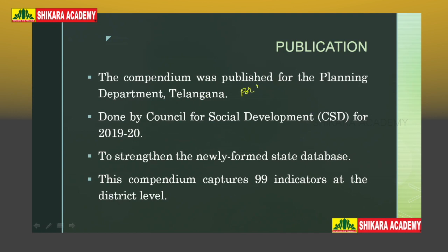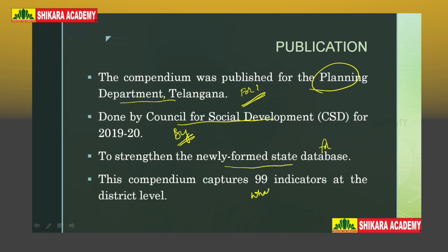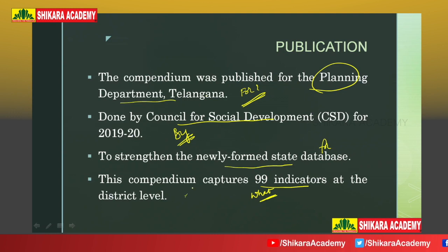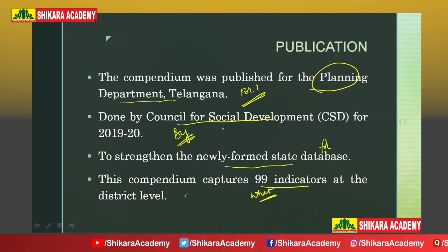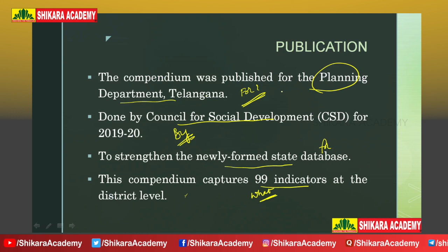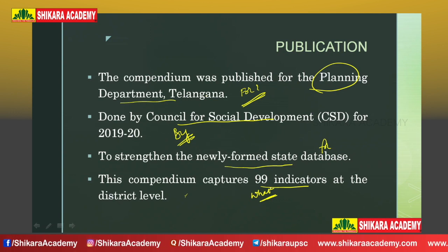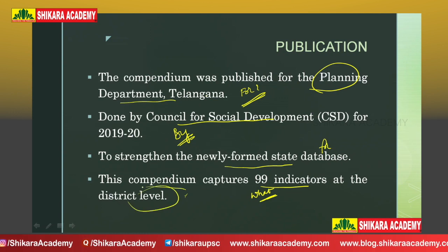This compendium was published for the planning department of Telangana by the Council for Social Development (CSD), to strengthen the newly formed state database. It captures 99 indicators at the district level.